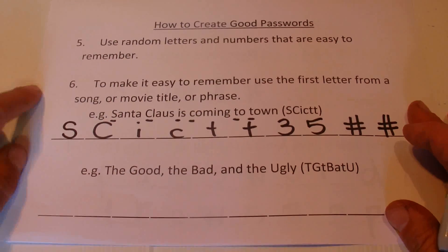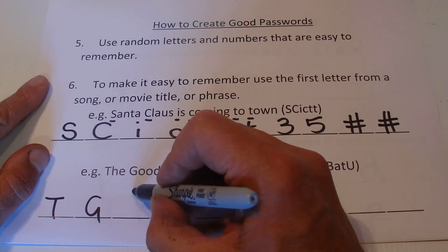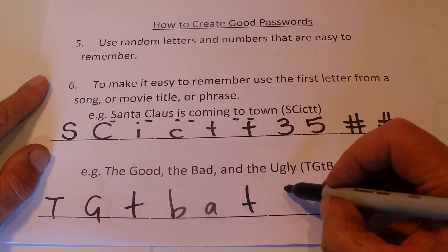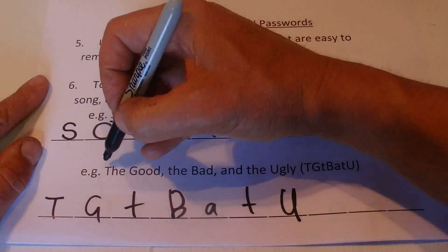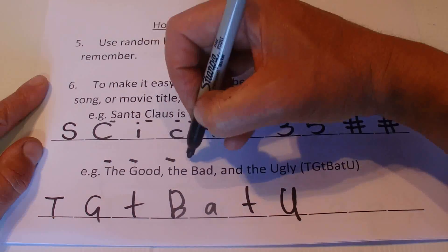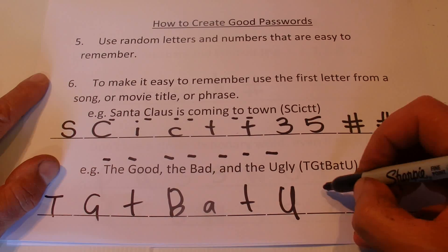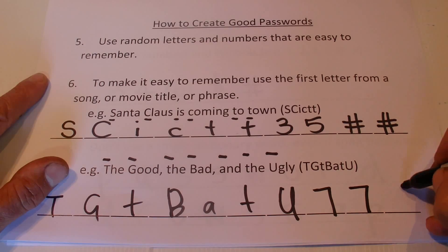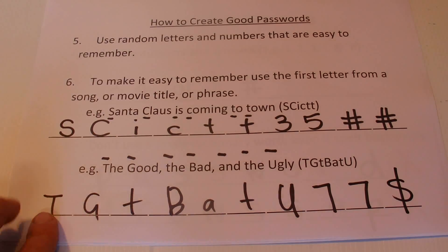The same thing you could do with a movie title — 'The Good, the Bad and the Ugly.' That gives you T-G-B-A-T-U, with a capital B for Bad and a capital U for Ugly — just the first letter from each word. Once again, you might add a couple of numbers and a symbol at the end, or in the middle or at the front, and there you go — a pretty strong password.